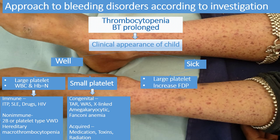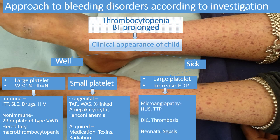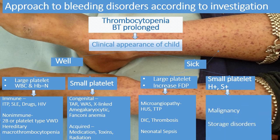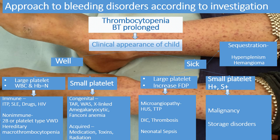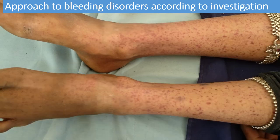If the child is sick with large platelets and increased FDP (fibrin degradation products), rule out microangiopathy, HUS, TTP, DIC, thrombosis, or neonatal sepsis. If platelets are small with hepatosplenomegaly, rule out malignancy or storage disorders. If a mass due to splenomegaly is found, think about hypersplenism. If the child has a hemangioma, thrombocytopenia may be due to sequestration.